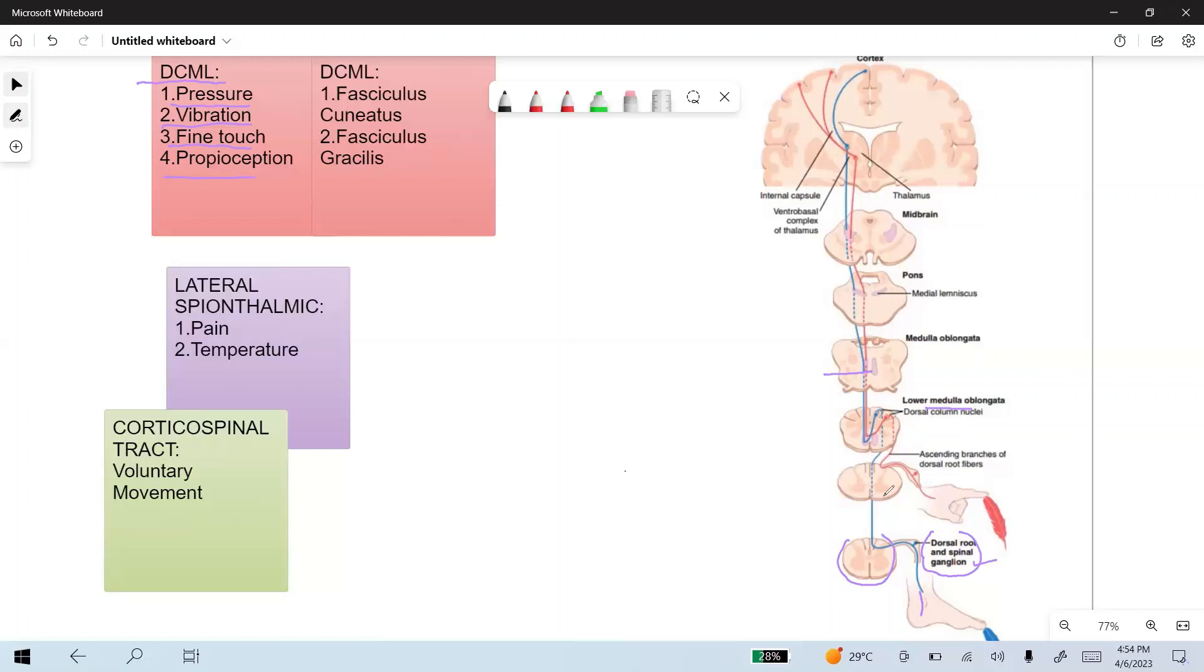Next important stuff is the fasciculus cuneatus and fasciculus gracilis. The fasciculus gracilis is basically the axon fiber that carries the sensory sensation from the lower limb, and these fasciculus gracilis are present at all levels of the spinal cord.